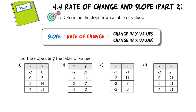This lesson is part two of section 4.4 on rate of change and slope. Our objective for today is to determine the slope from a table of values. We're actually doing the exact same thing that we were doing before. In the last lesson, we learned what a rate of change is — a rate of change is the same thing as slope. Rate of change is the change in the y values over the change in the x values.